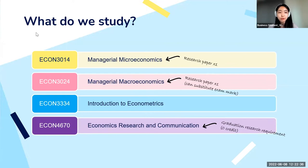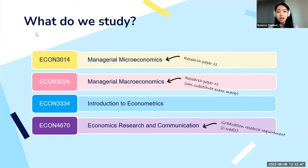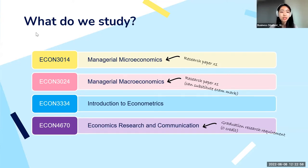The second required course, Managerial Macroeconomics, is also similar to high school macroeconomics but includes a lot of research work. The professor teaches you how to do research properly and you'll have many chances to write research papers. The third course, Econometrics, teaches you data analytical skills and how to use programming to analyze economic data.